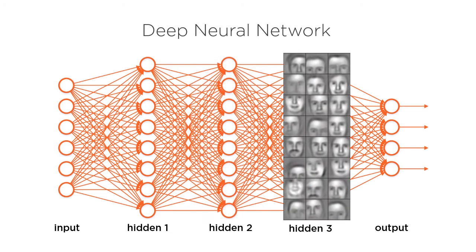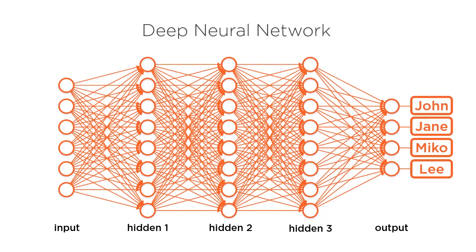The third hidden layer would learn to detect the general pattern for entire faces. The output layer would detect the most abstract representation of a person. In this case, the name of the person being recognized.